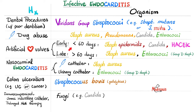If the question says artificial heart valve: if it's early — less than 60 days after receiving the new valve — think Staphylococcus epidermidis. If more than 60 days, think Staphylococcus aureus. Nosocomial with an IV catheter: think Staphylococcus aureus. Indwelling urinary catheter: think Enterococcus. Colon ulceration from ulcerative colitis or cancer: think Streptococcus bovis, now called Streptococcus gallolyticus. Immunocompromised with chronic indwelling catheter or prolonged antibiotic therapy: could be a fungus.